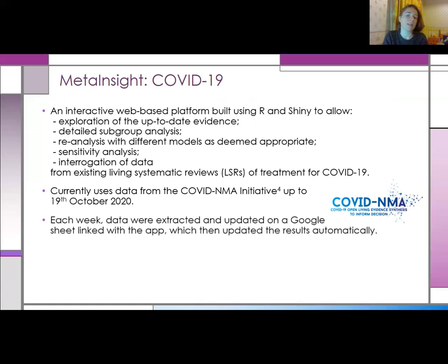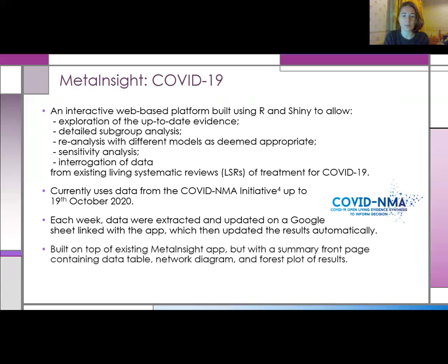We stored the data on a Google Sheet which was linked to the app via the Google Sheets 4 package. Each week the data would be extracted and the Google Sheet updated, and having the app linked with the Google Sheet ensured that the analysis results were always automatically updated. By building the app on top of the existing Meta Insight app, all of the functionality described earlier is in the COVID app. The tab to load in your own data was removed and a summary front page was built instead.